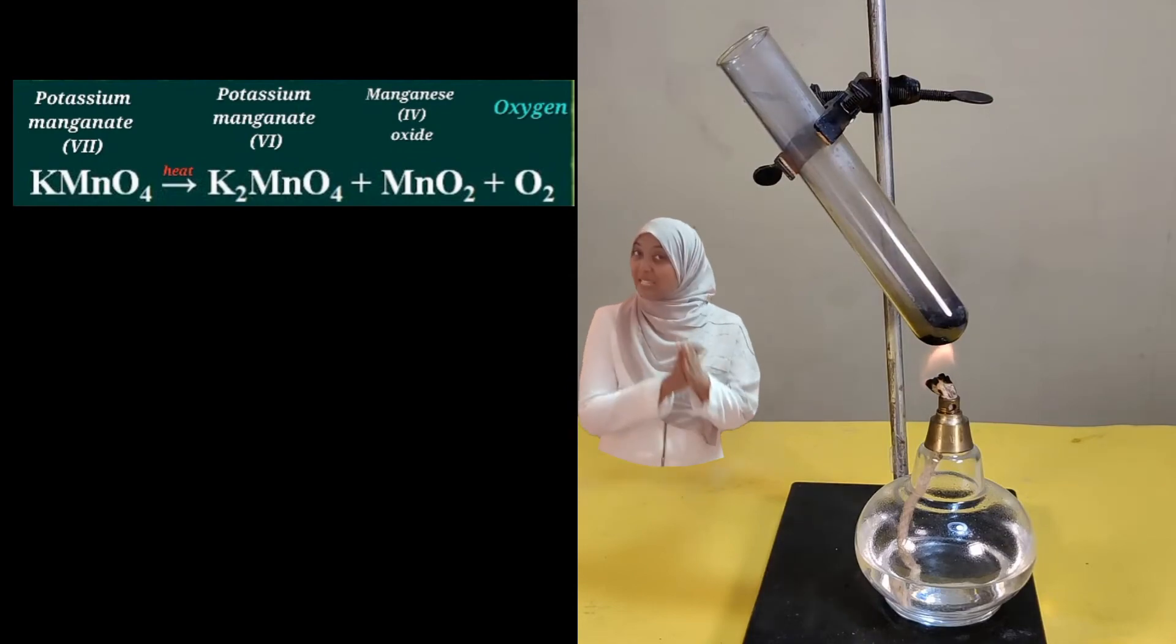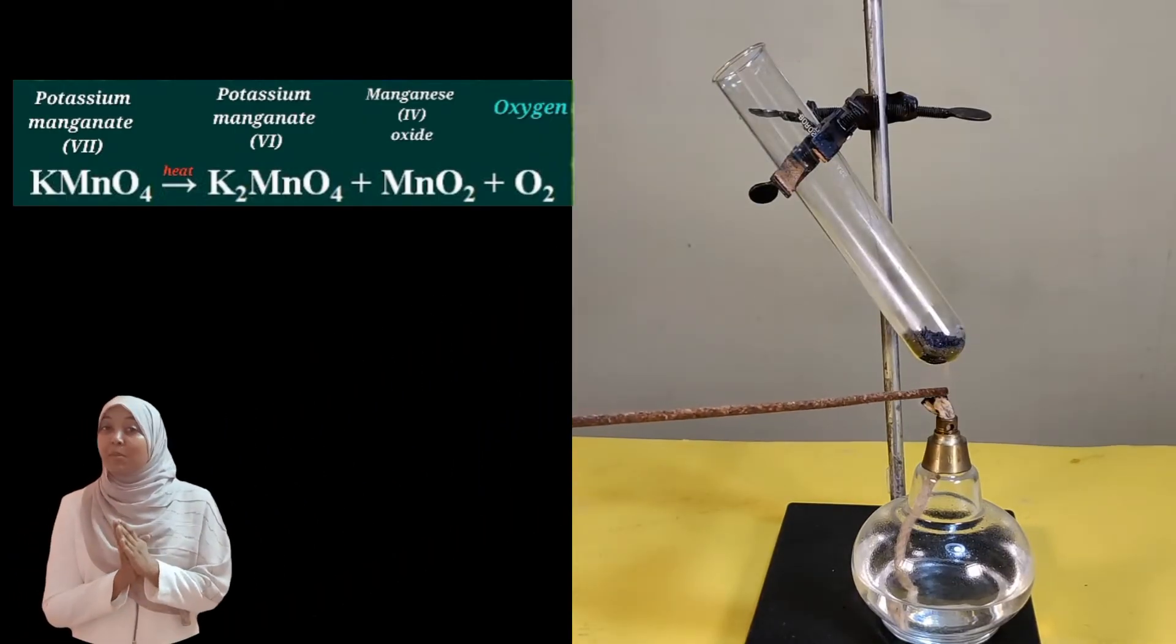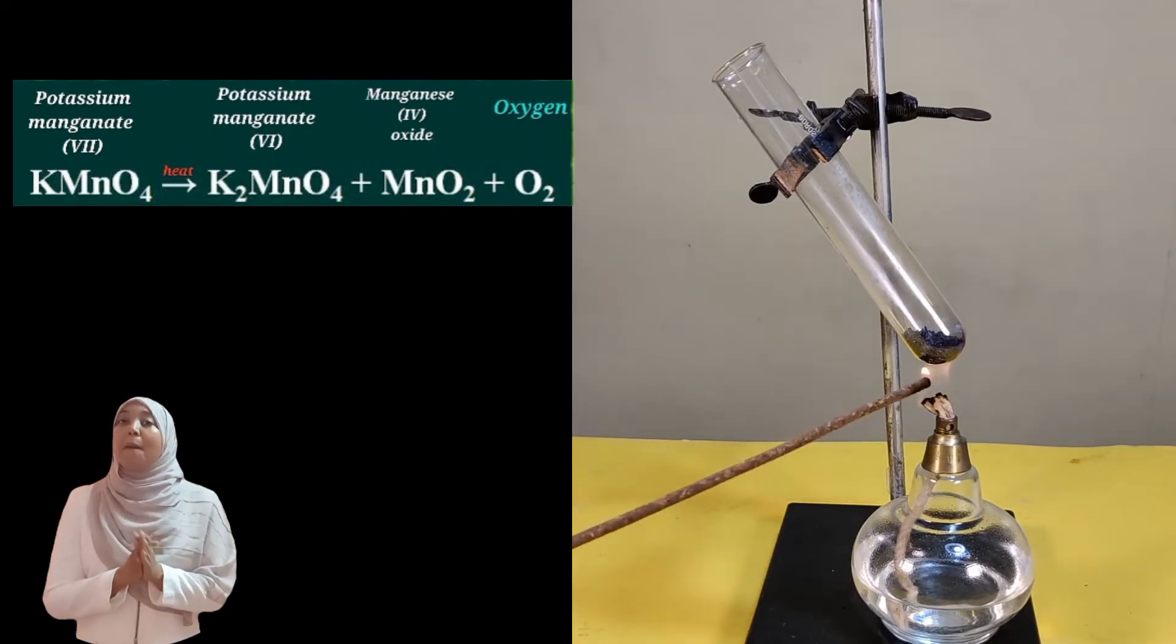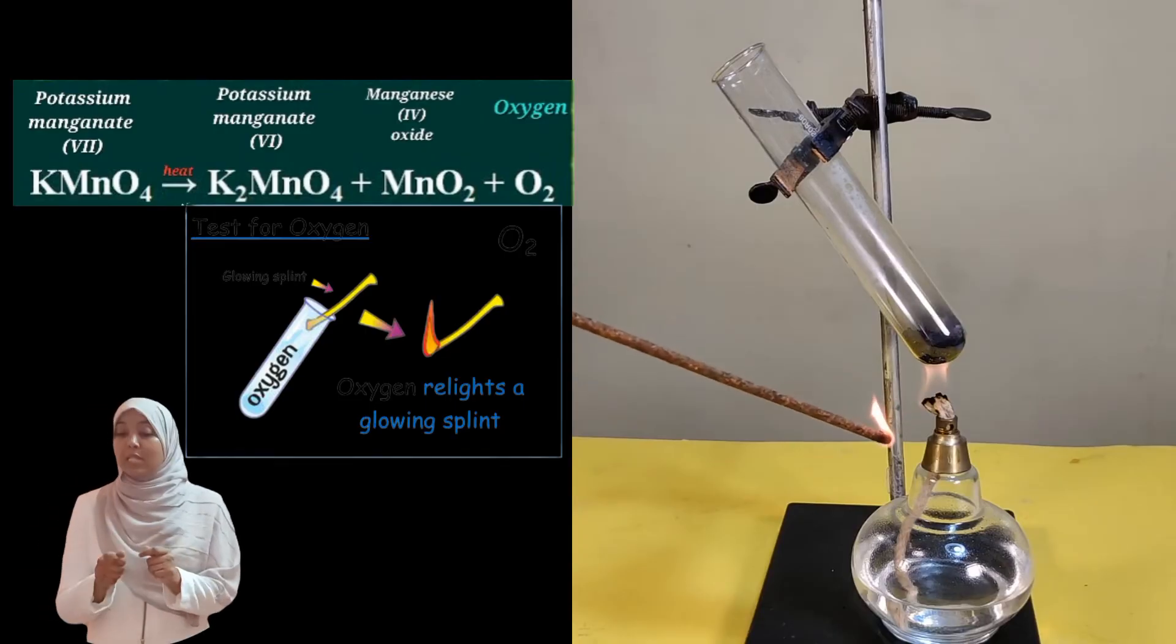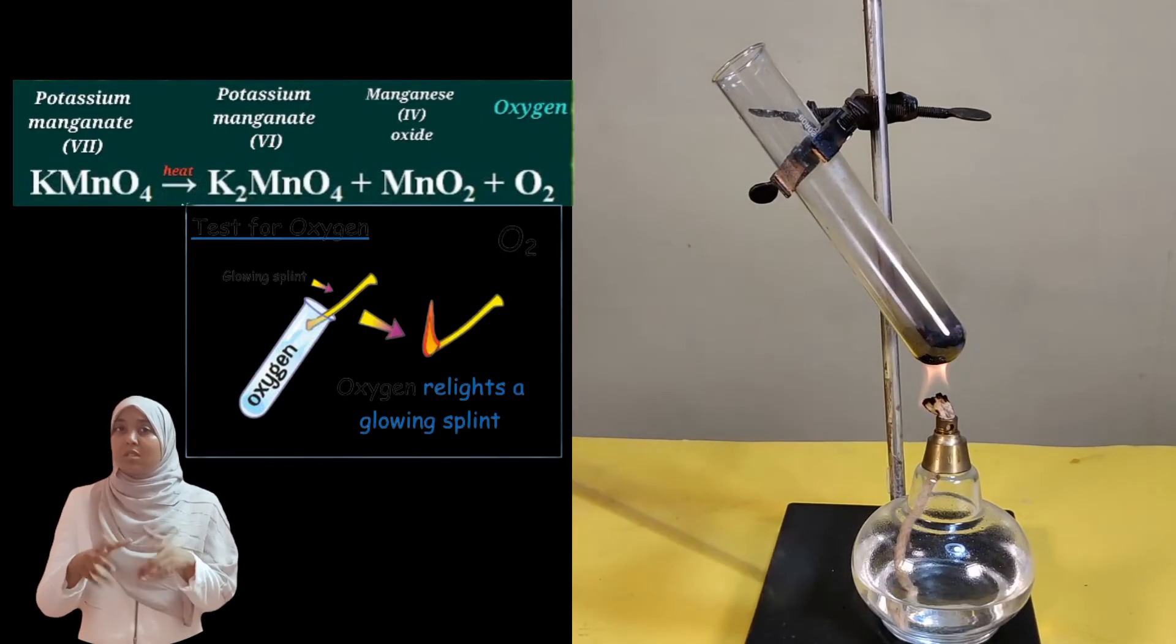Oxygen gas can be tested in the lab. You can find out whether a particular gas is actually oxygen or not by using a glowing splint. When you take a wooden splint, light it, and then put out the flame, it glows. That is essentially what a glowing splint is.